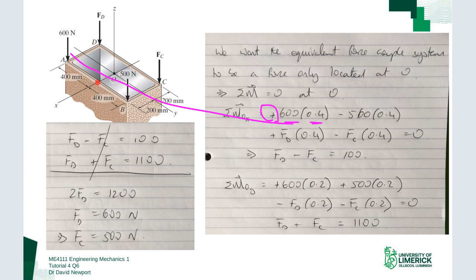The next force then is the 500 and again that's a distance of 0.4 away, but it's this side so as we rotate it's going to cause a clockwise rotation which gives us the minus sign. Then I have FD and FC is taken care, so FD times 0.4 and again it's going to cause a positive rotation and FC is going to cause a negative rotation. So that gives us an equation that has FD minus FC is equal to 100.